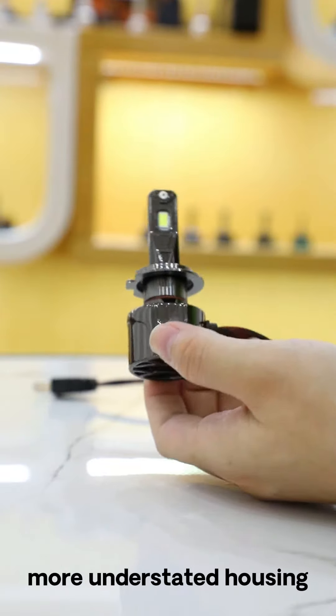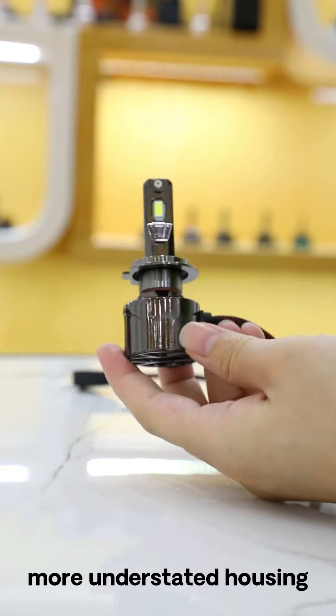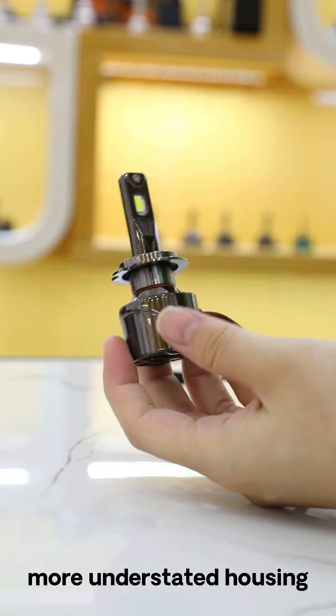The X7 headlight has a more understated housing, which is quite different from the X6.